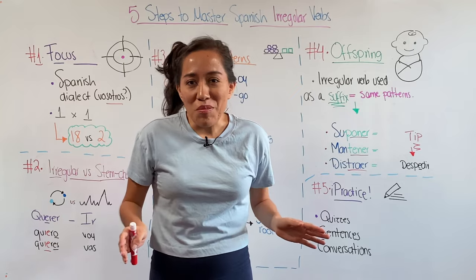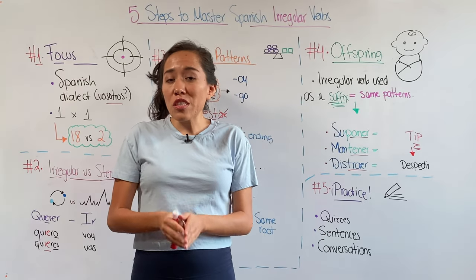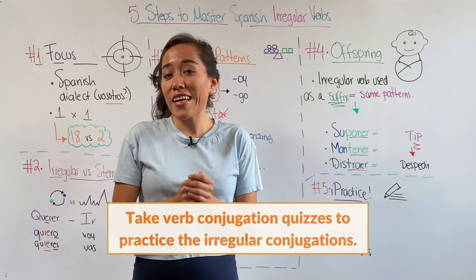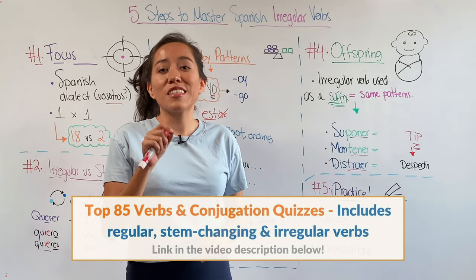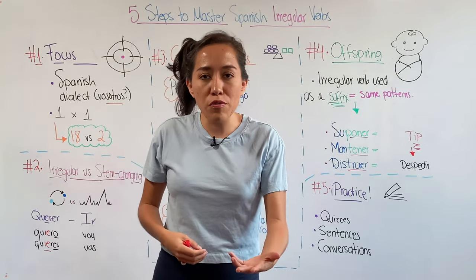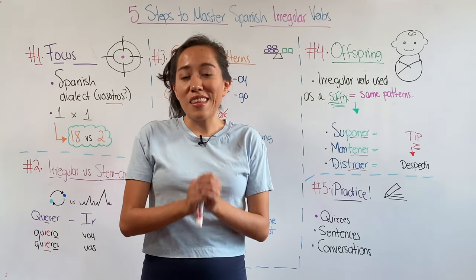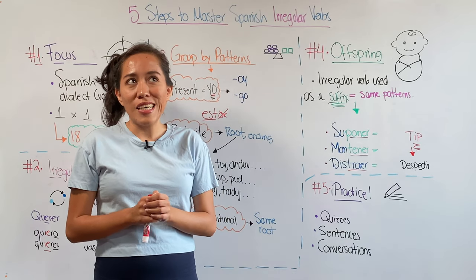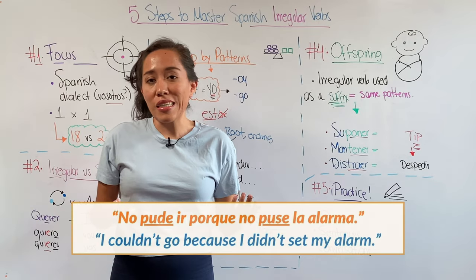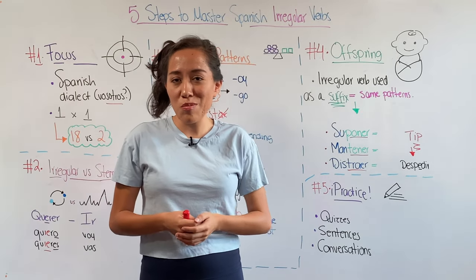Finally, the last step and this one is crucial: practice. Knowing these rules is not the same as applying them, so you need to get comfortable with them. What can you do to practice? First, take a lot of conjugation quizzes — I have a lot of quizzes for irregular verbs at tellmyspanish.com. Second, write sentences using irregular verbs in different tenses with different subjects so you can practice all of these patterns. And most importantly, use these irregular verbs in your conversations. If you don't have a conversation partner, you can chat with yourself — for example, 'I couldn't go because I didn't put my alarm.' Don't be shy and practice.